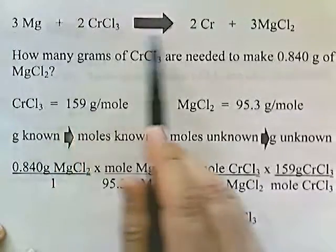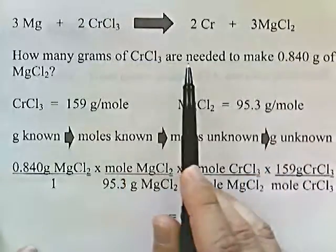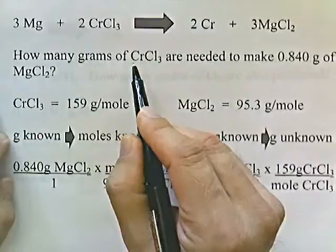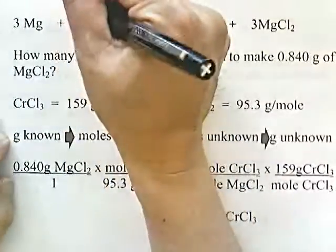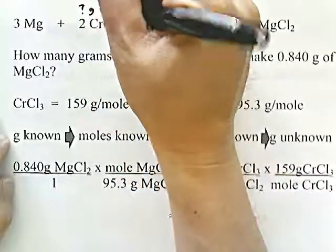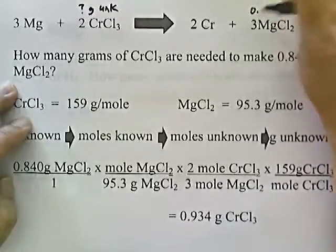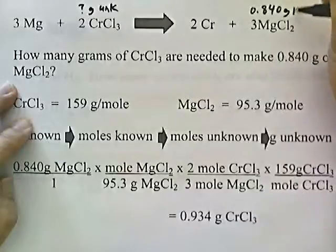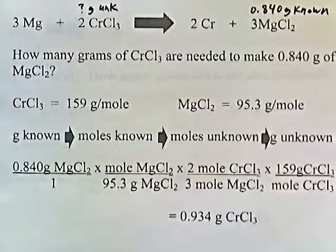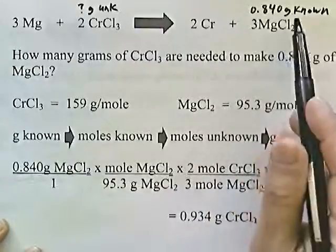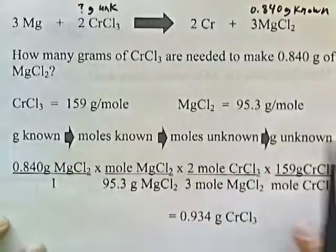Here's magnesium and chromium chloride producing chromium and magnesium chloride. How many grams of chromium chloride are needed to make 0.84 grams of magnesium chloride? They're asking for grams of chromium chloride, so that's the unknown. They tell us 0.840 grams of magnesium chloride, so that is the known. This problem tells us the amount of product and asks for the amount of starting material. Magnesium chloride is the known and chromium chloride is the unknown.